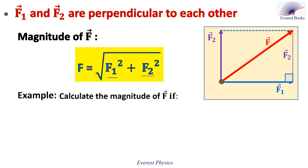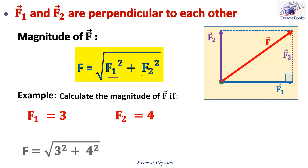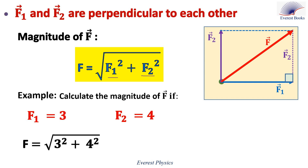Let's take an example. If the magnitude of the first vector is 3 and the magnitude of the second vector is 4, so the magnitude of the resultant vector is given by the square root of 3 squared plus 4 squared, which is equal to 5.